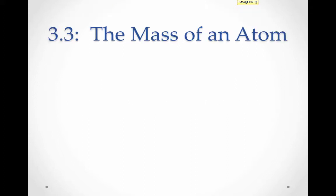So how can we talk about the mass of an atom? There are two different units we could use. If we used grams to talk about the mass of individual atoms, we'd be working with incredibly small numbers. For example, the mass of one hydrogen atom is equal to 1.66 times 10 to the negative 24th grams. That's a really, really small number.